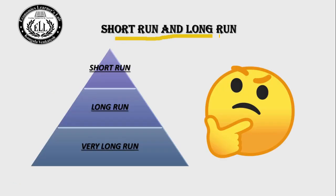Do you know short run and long run? As per microeconomics, short run means at least one factor can be changed at a time. In the long run, we cannot change any of the factors. No one has classified the exact time periods, but commonly we take 1 month to 2 years as the short run, higher than 5 years as the long run, and decades or around 50 years as the very long run.